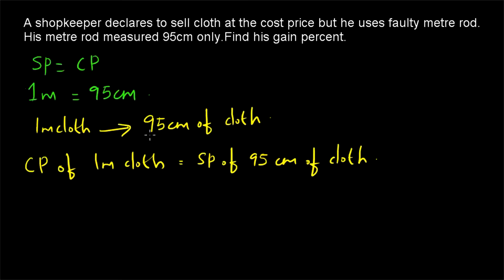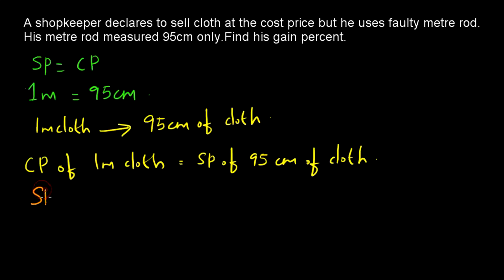He is using a 1 meter rod, but the 1 meter rod is actually measuring only 95cm of cloth. So we can infer that the selling price of 95cm of cloth is equal to the cost price of 1 meter cloth. From this equation we can derive a relationship between selling price and cost price: SP = (1/95) × CP.